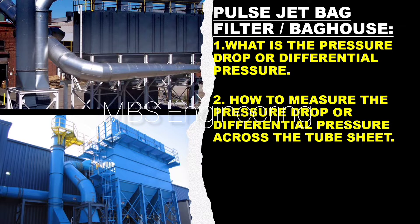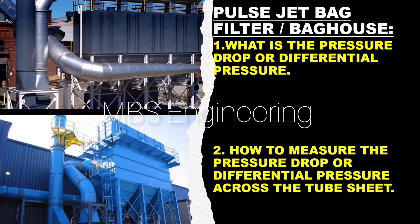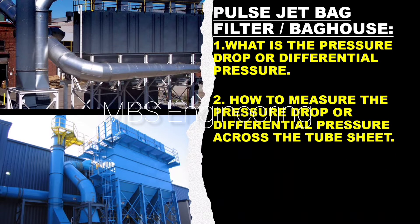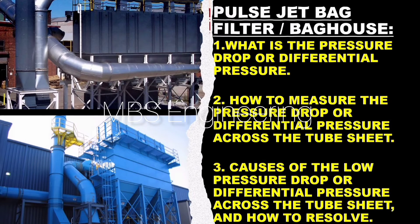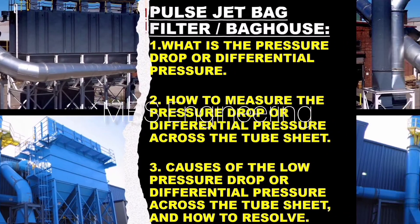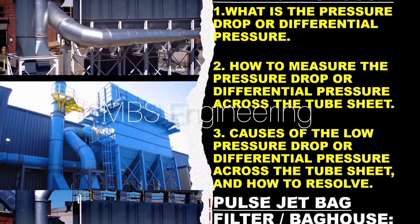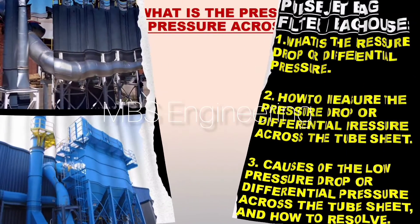Today we are going to discuss and understand the following topics in the bag filter or baghouse system: first, what is the pressure drop or differential pressure; second, how to measure the pressure drop or differential pressure across the tube sheet; and third, causes of the low pressure drop or differential pressure across the tube sheet, and how to resolve.